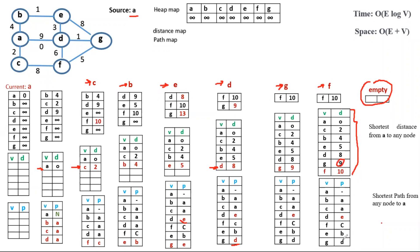To find the path to G from A, we trace back using the path map: G → D → E → B → A. Here is the path.